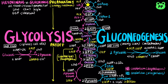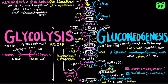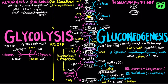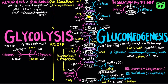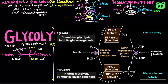Second, glucokinase is not inhibited by glucose-6-phosphate. Third, it is instead inhibited by a regulatory protein. Phosphofructose kinase-1, or PFK-1, is the step that commits glucose to glycolysis, and it is reciprocally regulated with fructose-1,6-bisphosphatase-1 by the allosteric regulator fructose-2,6-bisphosphate. Fructose-2,6-bisphosphate is synthesized from fructose-6-phosphate by phosphofructose kinase-2, and degraded by fructose-2,6-bisphosphatase-2. These two enzymes are part of the same bifunctional protein.